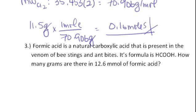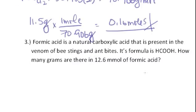What about another one? Formic acid is a natural carboxylic acid. It's in the venom of bees and ants, and we're given its formula HCOOH. We need to know how many grams there are in 12.6 millimoles. This is a bit more complicated. First, let's find the molecular weight.